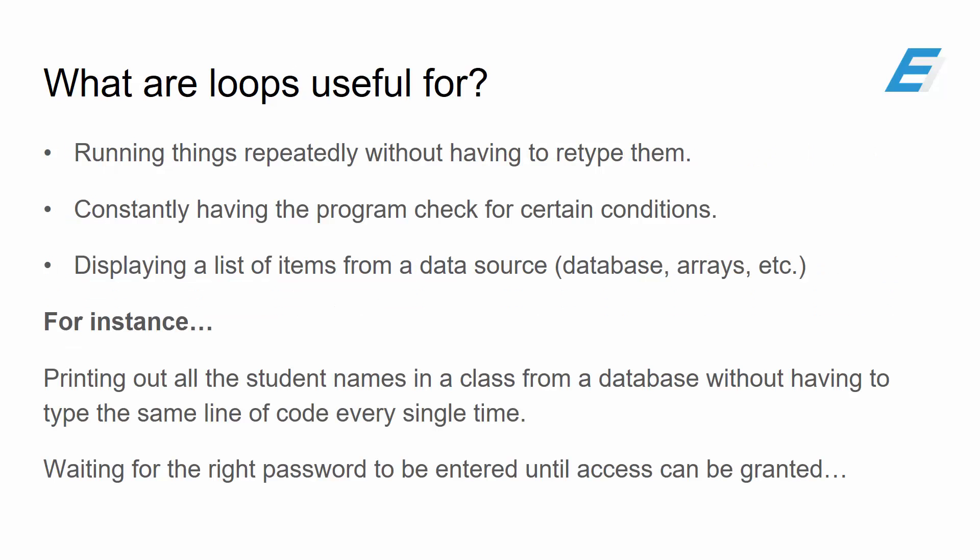So what are loops useful for? Loops are useful for many things, but the three things that stand out the most are: running things repeatedly without you having to retype them in the program; having the program constantly check for certain conditions until they are met to proceed with the next function; and displaying a list of items from a data source such as a database or arrays, etc., without having to type multiple lines of code.